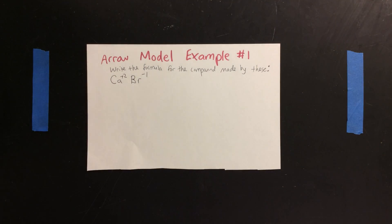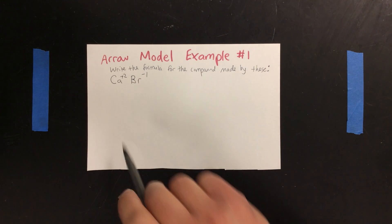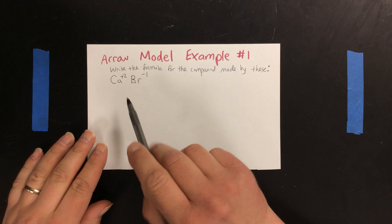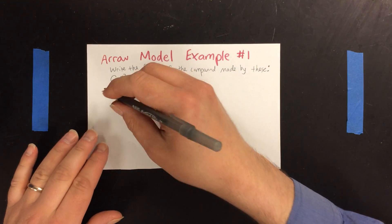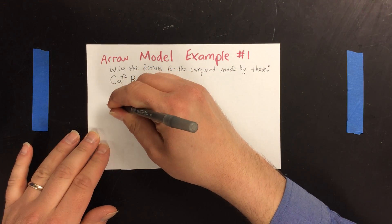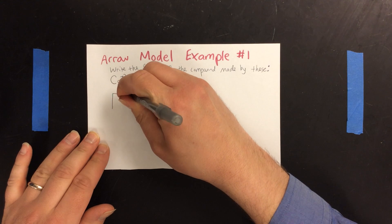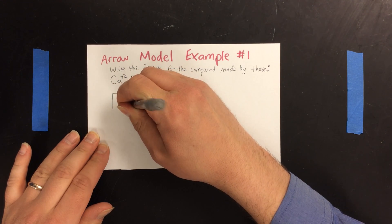The next step is to draw your arrow model pieces for each of these two elements. Since calcium is plus two, I need to draw a picture that has two points out. One, two.